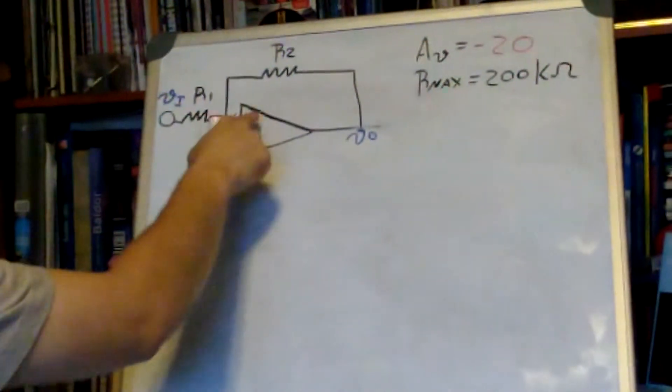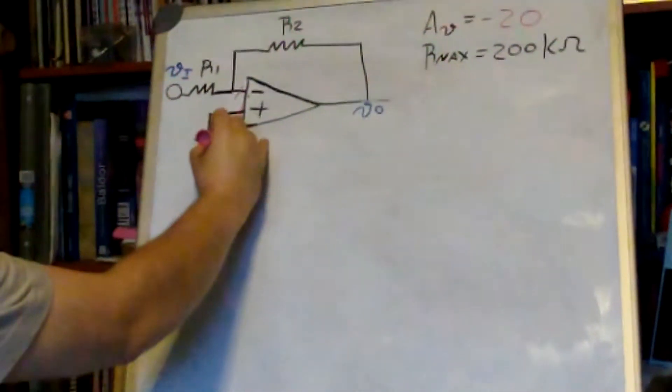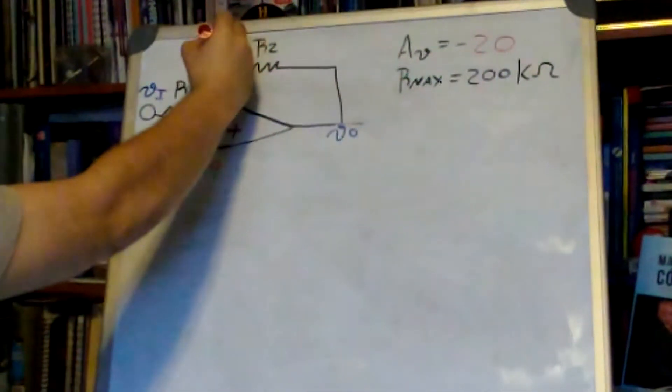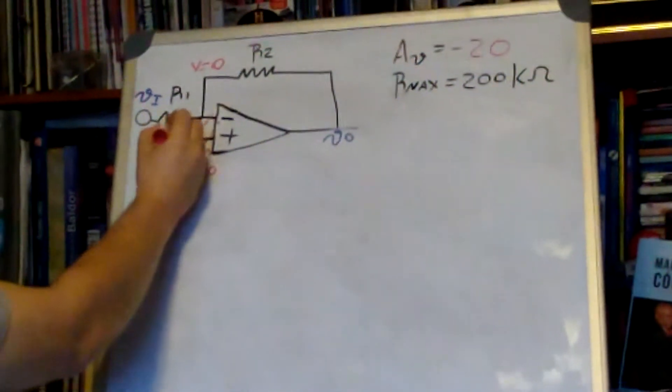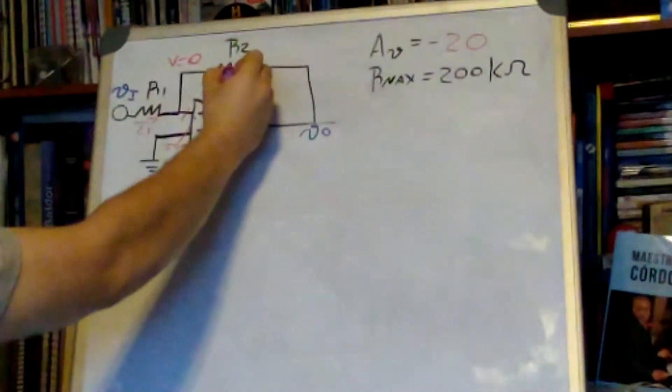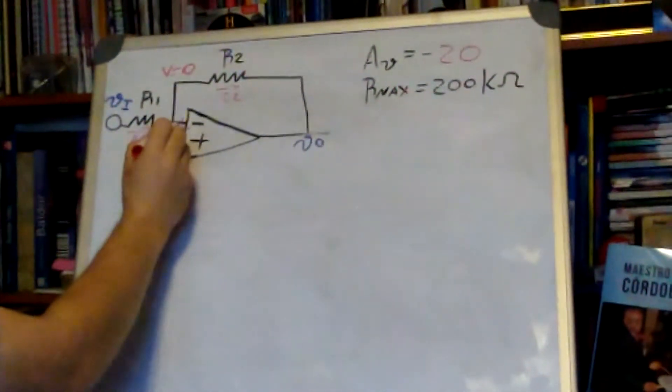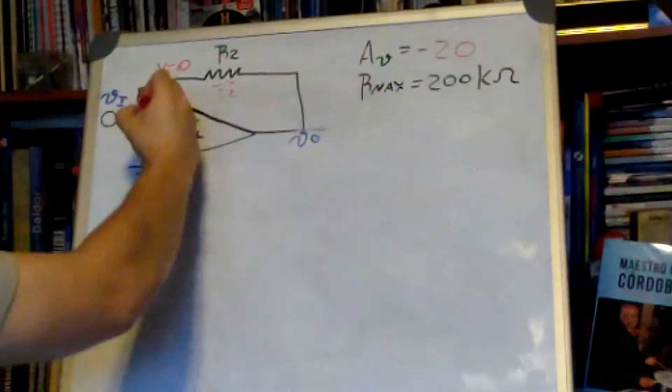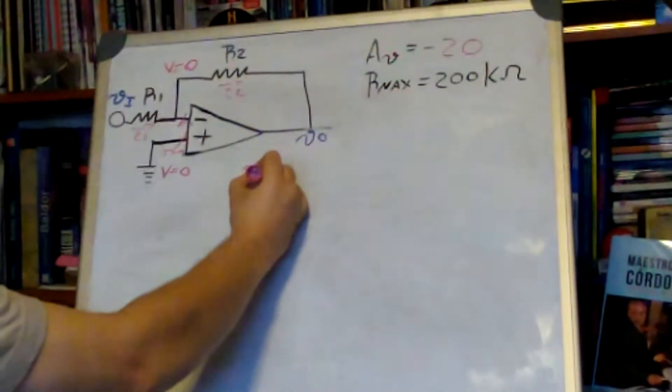No current going inside, but we also have the virtual ground, so potential difference V is equal to zero. Because of the virtual ground, we know that there is a current I1 and a current I2. Because this current goes in this direction but there is no current going here, the whole current is going like this, so we can say that ideally I1 is equal to I2.